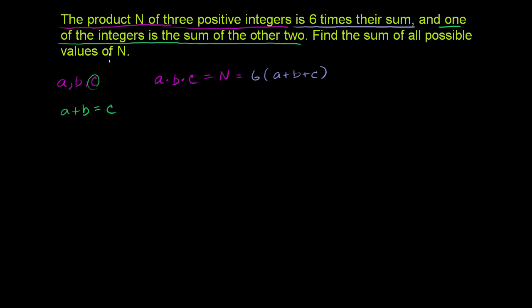Find the sum of all possible values of n. So let's just try to do a little bit of manipulation of the information we have here, and maybe we can get some relationship or some constraints on our numbers. We know that a plus b is equal to c, so we can replace c everywhere with a plus b.